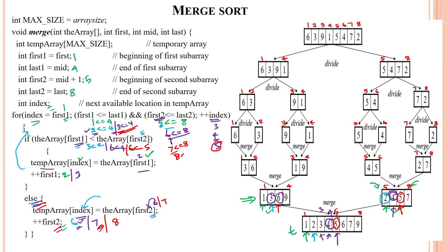We check: array of first index 3 is 6, and array of second index 8 is 7. So 6 less than 7 is true — we assign value 6 into the temporary array at index 6. First index is incremented to 4. Coming back: 4 less than or equal to 4 is true, 8 less than or equal to 8 is true. Array of first index 4 is 9, and array of second index 8 is 7. So 9 less than 7 is false.